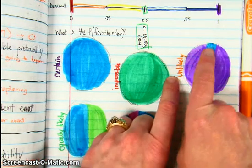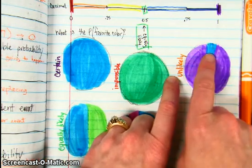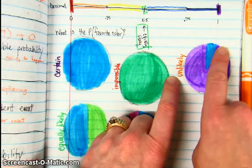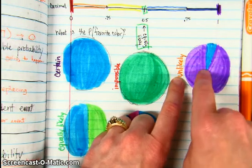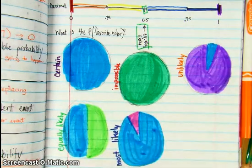Unlikely, I've got just this little bitty sliver of battery charged blue right here, and the rest of it is a different color. So it's very unlikely that I would get my favorite color on this circle, on that spinner.